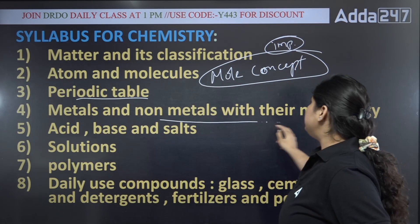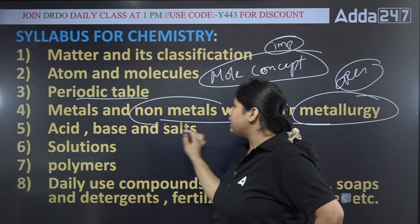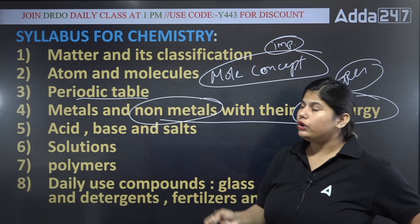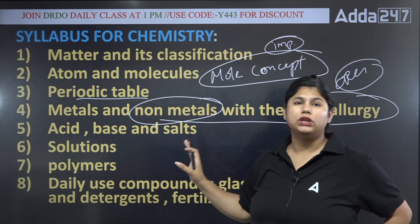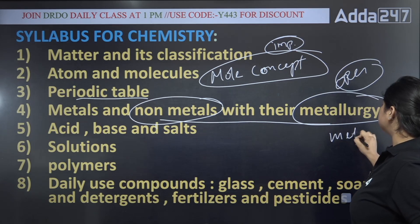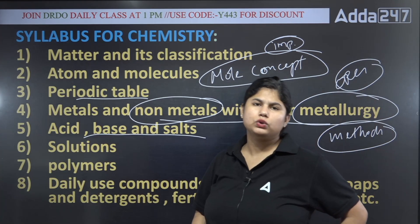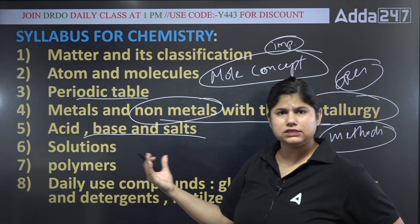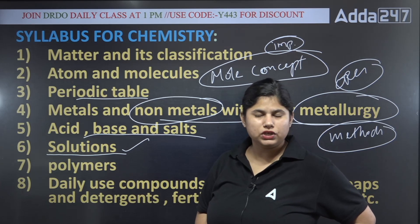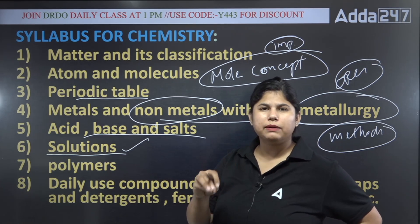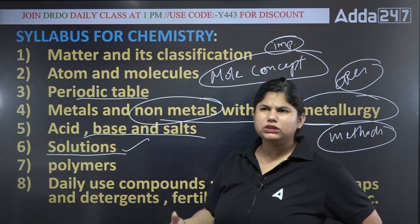Metals, non-metals, with their metallurgy—meaning your ores also. What are the characteristics of metals and non-metals, where can they be used. Remember, metal and non-metals, you will learn many things. The ores, methods, what are the ores. Acid, base, and salt—generally what is acid-base common name, chemical name. Solutions you will learn: colloids, true solution, heterogeneous mixtures, heterogeneous solutions, emulsion—these types.